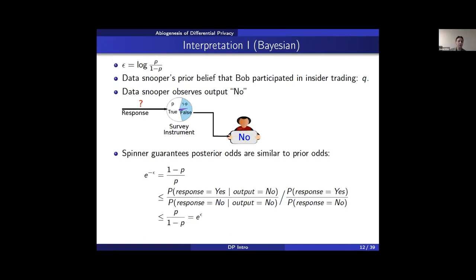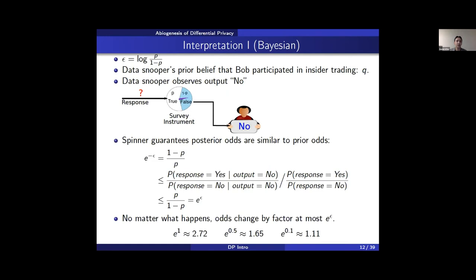What if randomized response produced output no instead of yes? We get the same guarantee — working through the math, the change from prior odds to posterior odds is again bounded between e to the minus epsilon and e to the epsilon. So no matter what happens, the odds change by at most a factor of e to the epsilon, regardless of what the respondent does.